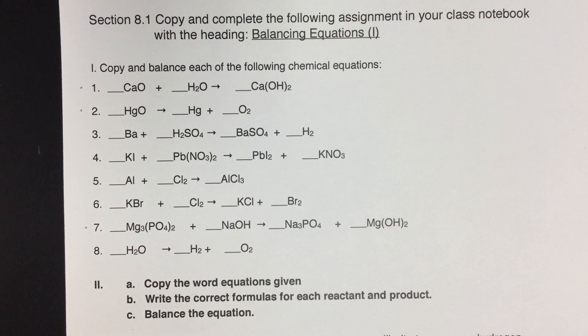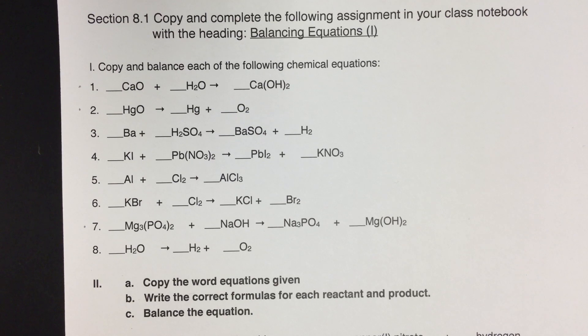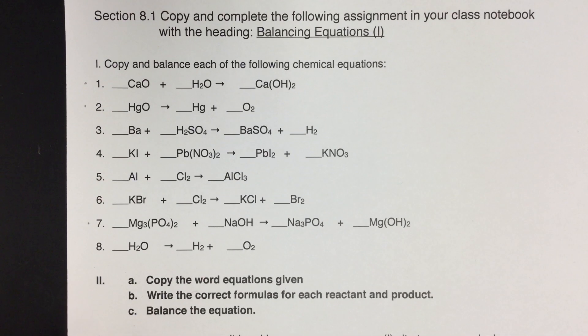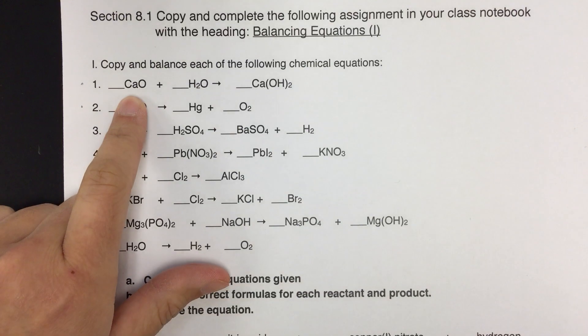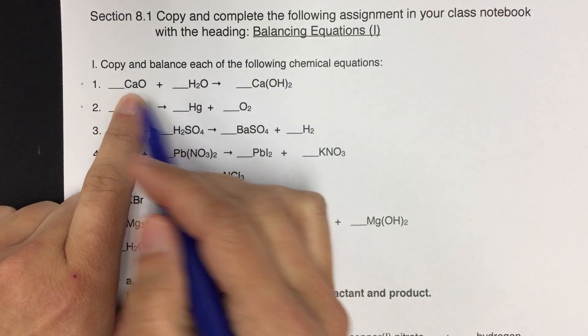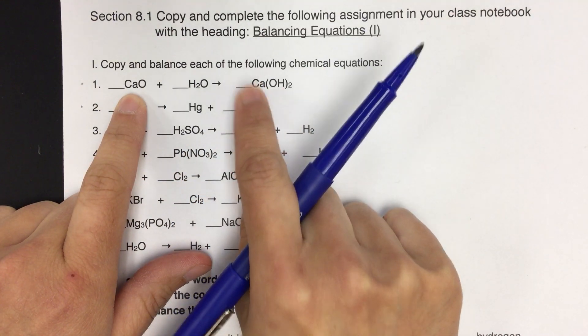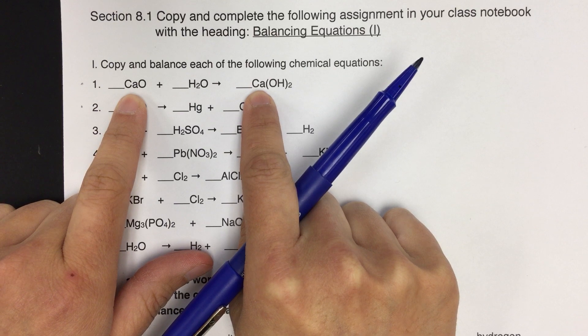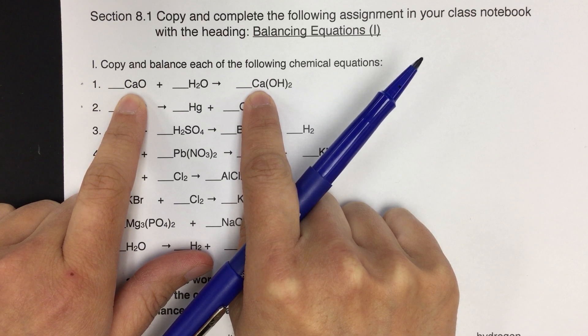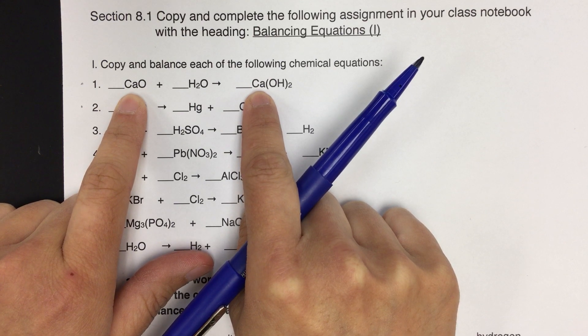So when I look at number 1, oxygen is a bad place to start because it's in three different things. So a better choice would be either calcium or hydrogen. So I'm going to go ahead and start with calcium. And again, the goal is to balance the things on the left with the things on the right. So if I look here, CaO, there's one calcium on the left side of this equation, the left side of the arrow. On the right side, there's also one calcium. So calcium so far is already balanced and we don't even need to add any coefficients.